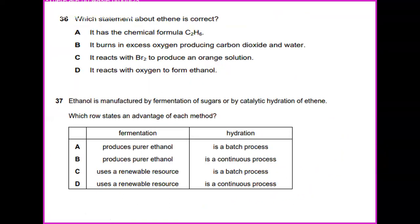Which statement about ethene is correct? When ethene is burned in excess of oxygen, it produces carbon dioxide and water. This reaction is an exothermic reaction and produces heat. So the answer for 36 is B. It burns in excess oxygen producing carbon dioxide and water.